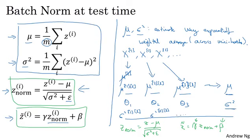And then you use those values of mu and sigma squared at test time to do the scaling you need of the hidden unit values z. In practice, this process is pretty robust to the exact way you use to estimate mu and sigma squared. So I wouldn't worry too much about exactly how you do this. And if you're using a deep learning framework, they'll usually have some default way to estimate the mu and sigma squared that should work reasonably well as well.